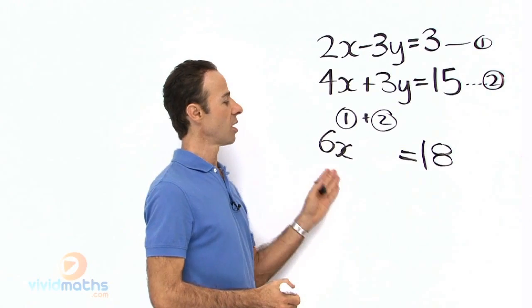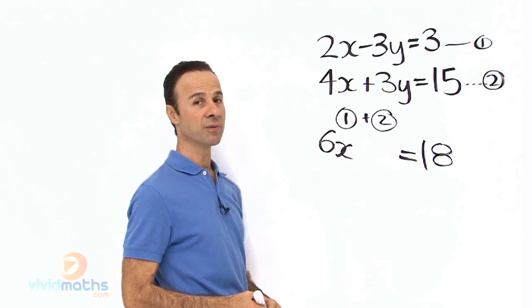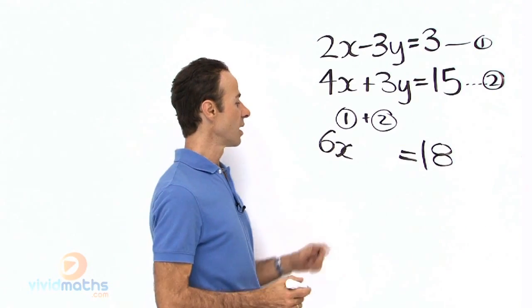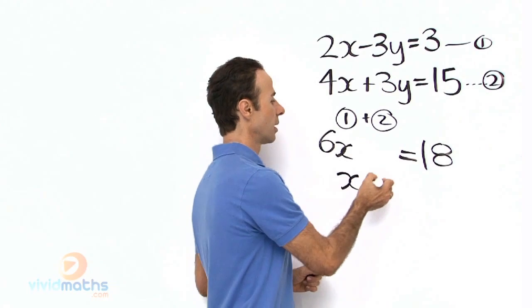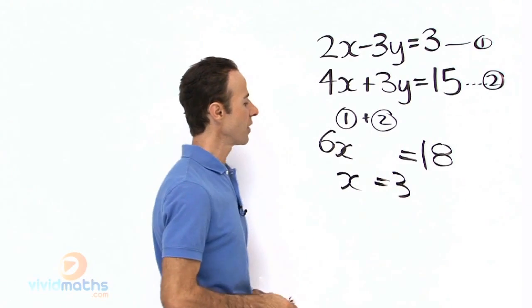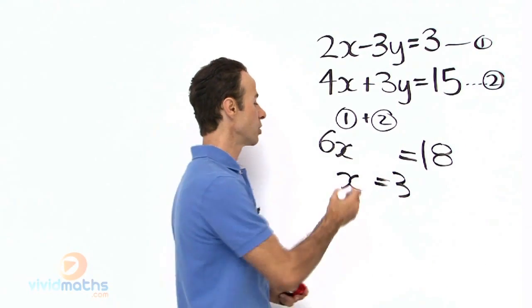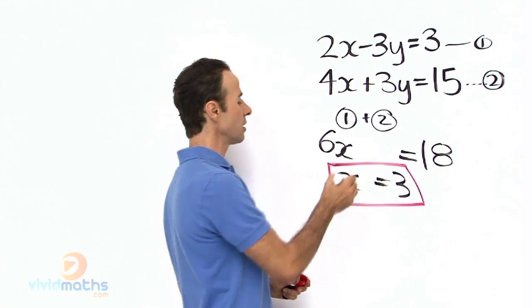Dividing both sides, we got 6x = 18. We divide both sides by 6 and that leaves 1x = 3. So that's our first one, x = 3, our first pronumeral equation.